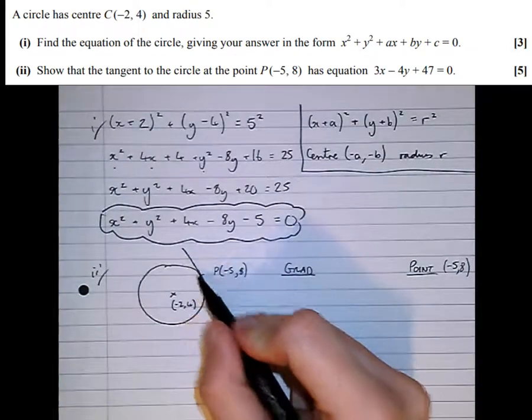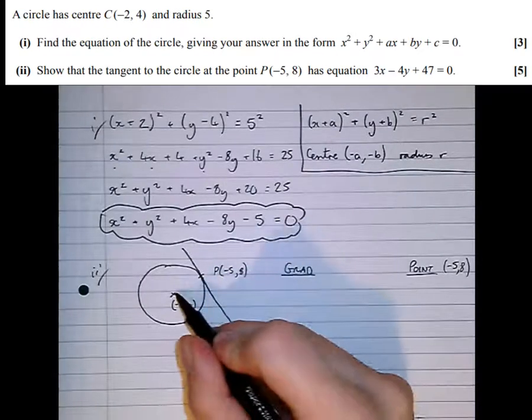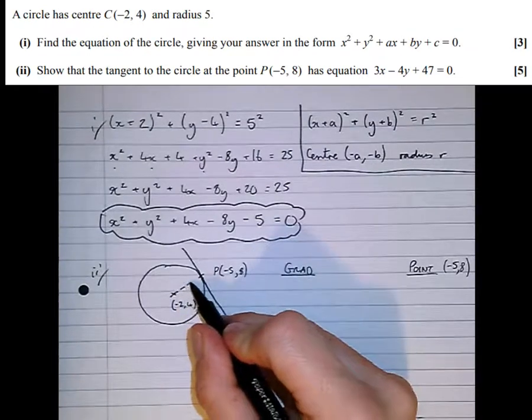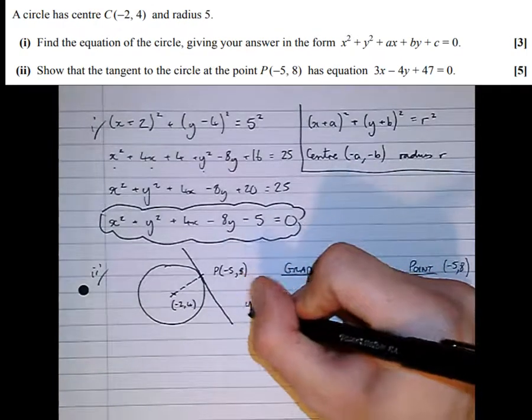We can't directly find the gradient of this line because we've only got one point on it. However, we can find the gradient of a line perpendicular to that—the gradient of the normal or the radius.